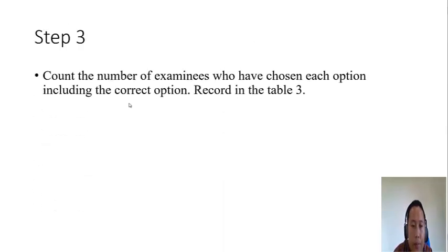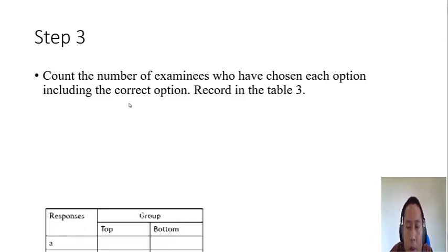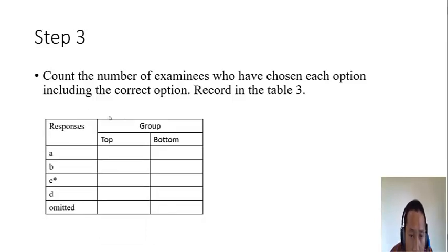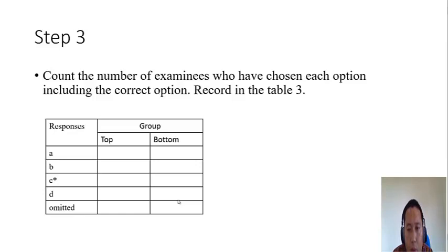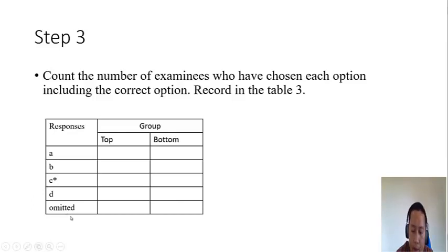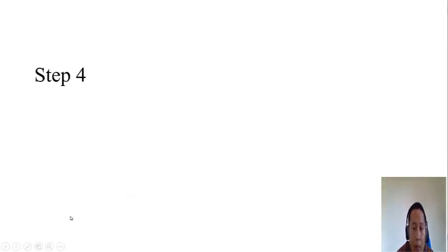Step three: find out the total number of students who chose option A, B, C, and D, as well as those who omitted, and record in table three. Table three has MCQ options in the first column, and top group and bottom group totals in the second and third columns respectively. Add up the number of students who chose each option from table one and table two and record in table three. Sometimes students simply leave items blank — you can count these under 'omitted.'